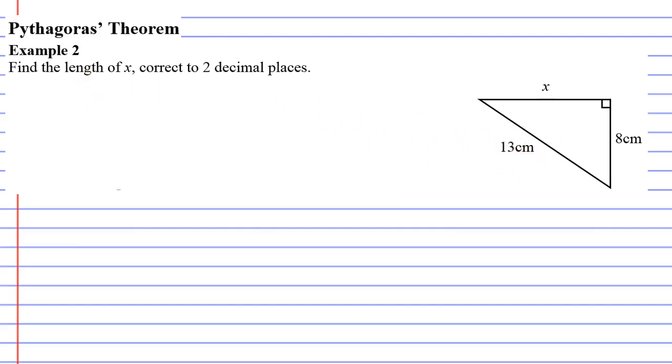If we look here, the hypotenuse is actually 13, so we'll label that as c. We'll label x as a and 8 as b. It really doesn't matter which one you label as a and b.